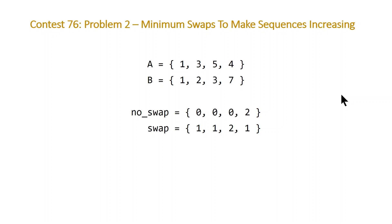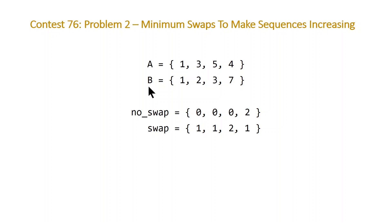The way we're going to do this is by creating two arrays: one called 'no_swap' and one called 'swap'. These values represent the minimum number of swaps up to the given index, given that we are either not swapping at index i, or we are swapping at index i. For index 0, 'no_swap' is the minimum number of swaps needed with no swap at index zero — which is zero — and 'swap' is the minimum if we are swapping at index zero, which is one.